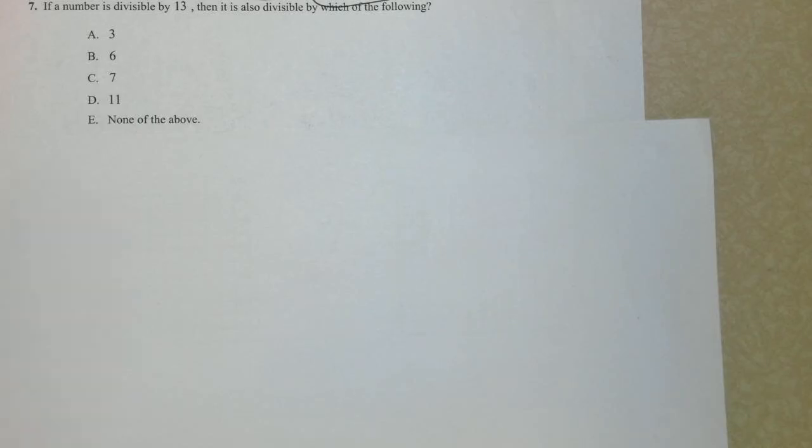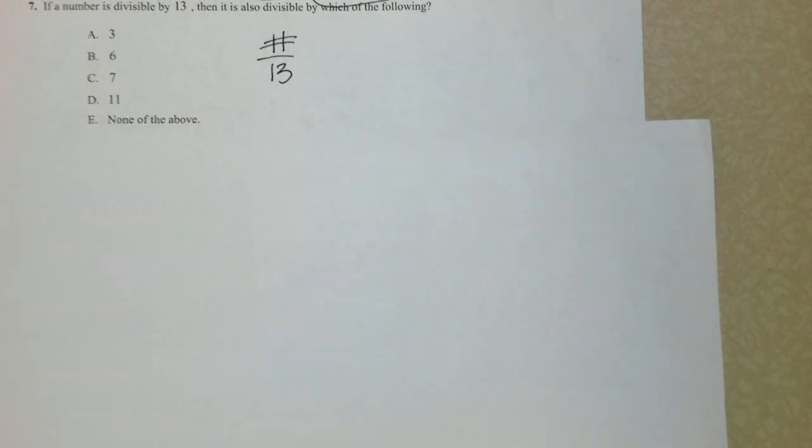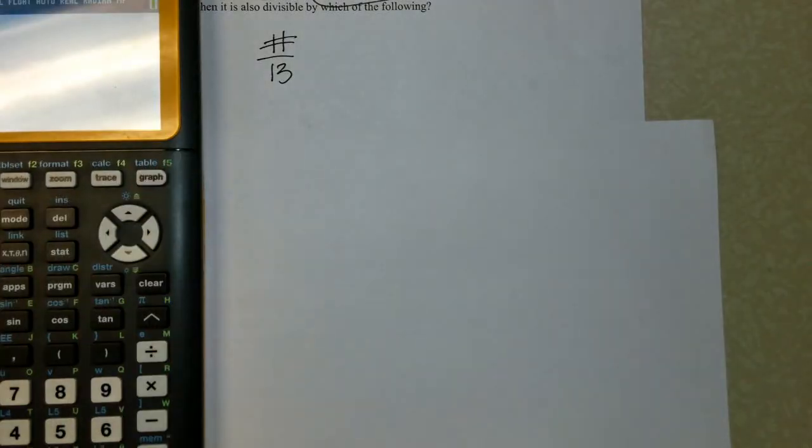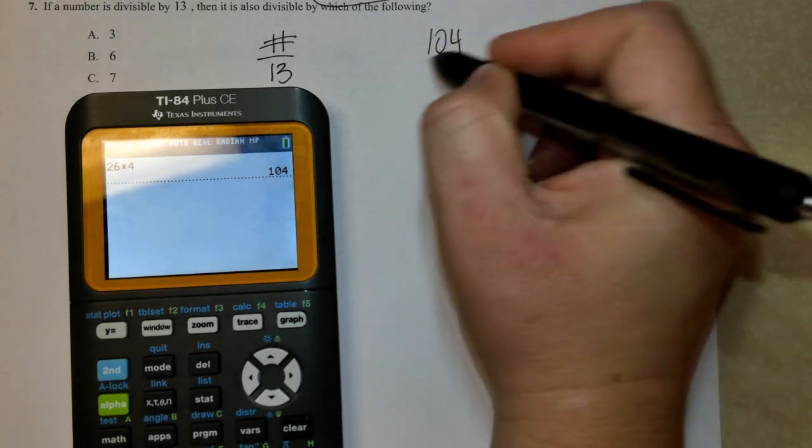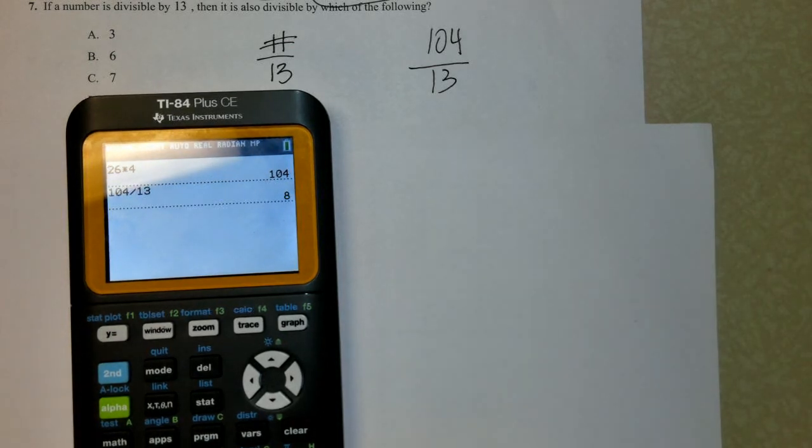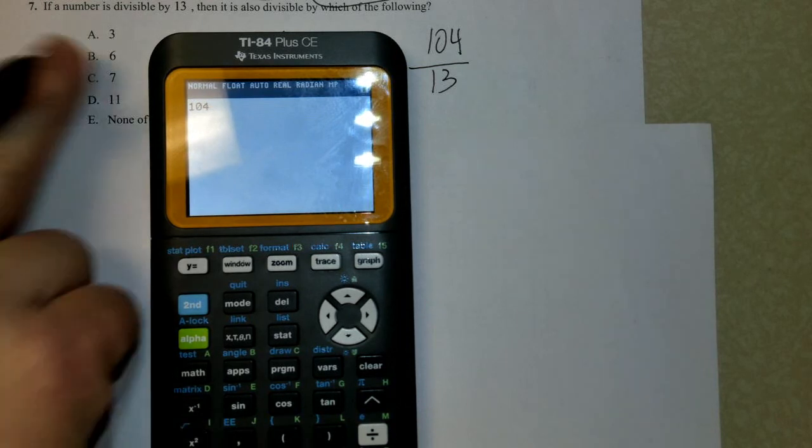If a number is divisible by 13, so I want to write that out. We have a number, and you can divide it by 13. Then it is also divisible by which of the following numbers? If this number can be divided by 13, let's just take 13 times some number. Let's take 13 times 4, for instance. So I'm going to write down 104. 104 divided by 13. And I'm going to show you how we know it's divisible, because we divide with a nice whole number. So I'm going to take this 104, and I'm just going to check the other ones. 104 divided by 3. Doesn't work.